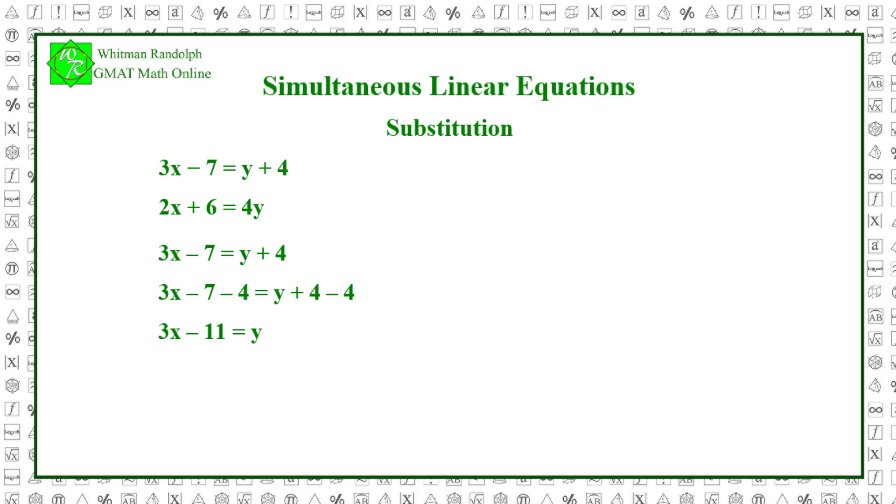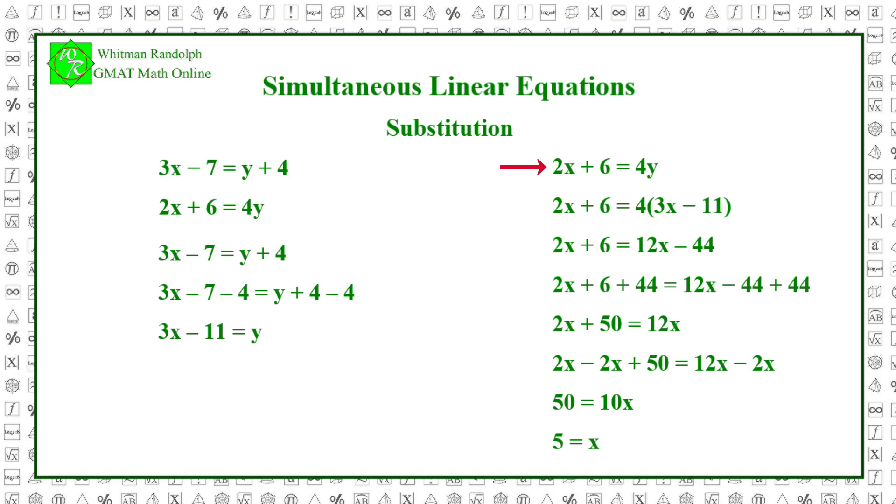Now we substitute 3x minus 11 for y in the other equation and solve for x. 2x plus 6 equals 4y. So 2x plus 6 equals 4 times 3x minus 11. 2x plus 6 equals 12x minus 44. 2x plus 6 plus 44 equals 12x minus 44 plus 44. Therefore, 2x plus 50 equals 12x.